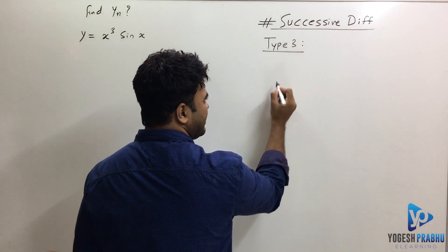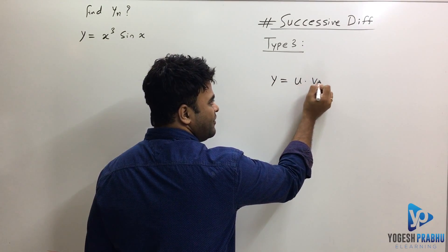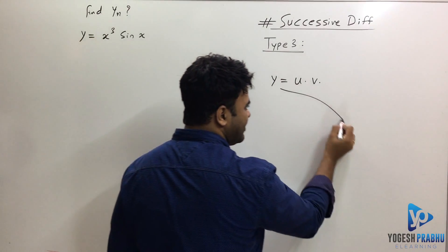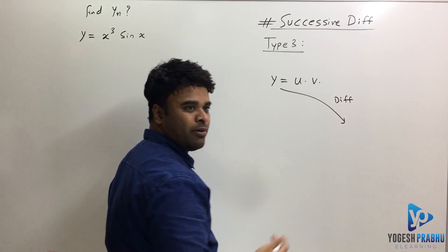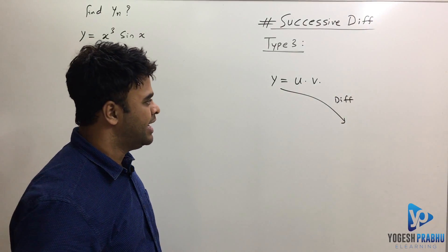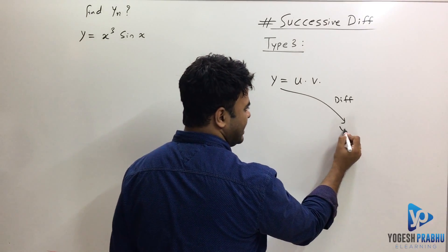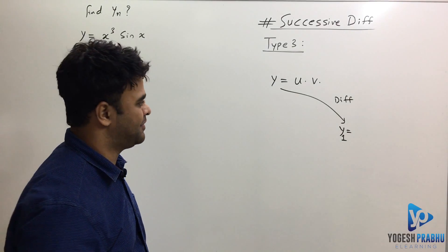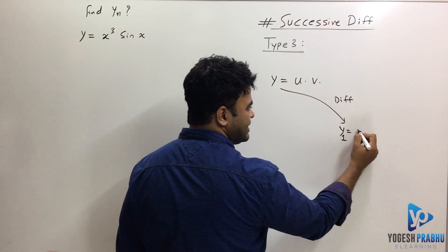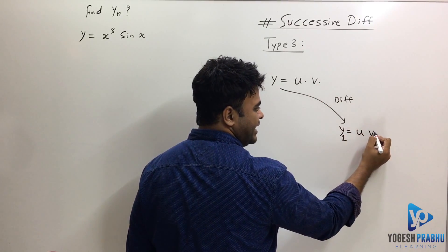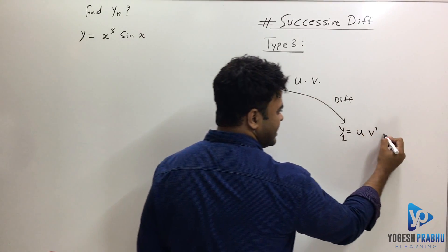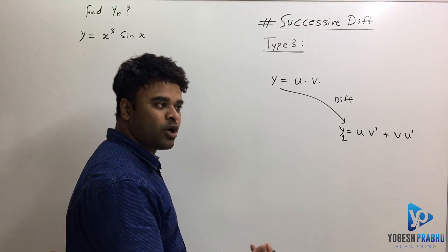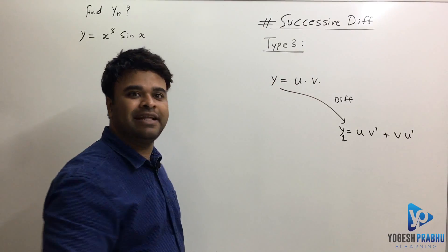Suppose you have y = u·v, a product of two terms, and you want to find the differentiation. For the first differentiation, we write y₁ using the product rule: u remains as it is and the derivative of v is v', then v remains as it is and the derivative of u is u'. We know this formula, but it works only when finding the first differentiation.